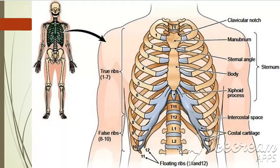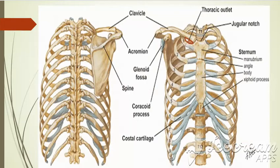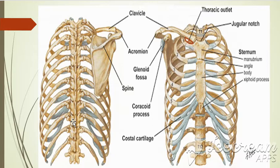Ribs 11 and 12 are known as floating ribs because the posterior end is attached with the vertebra and the anterior end is free — because of that, these two ribs are known as floating ribs. Then come to the 8th landmark, that is the thoracic vertebral spine. The first prominent spine felt at the lower part of the back of the neck is that of the 7th cervical vertebra.